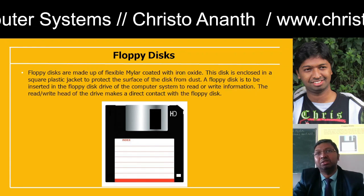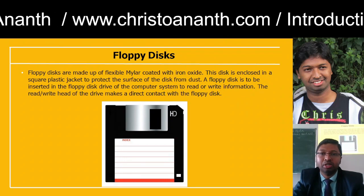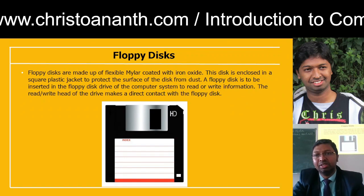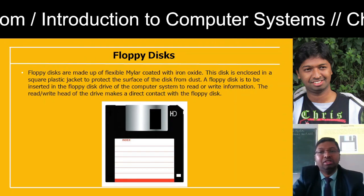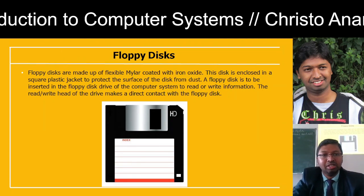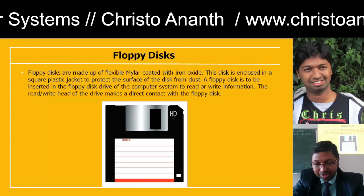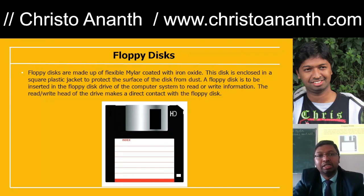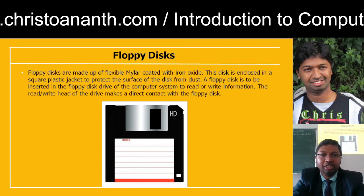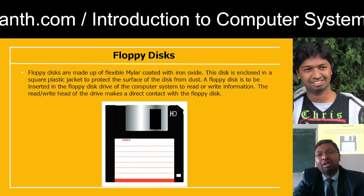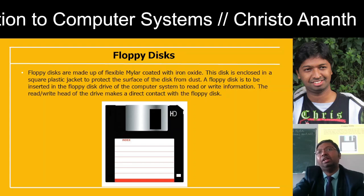A floppy disk is a flexible mylar disk coated with iron oxide, enclosed in a square plastic jacket to protect it from dust. The floppy disk is inserted into a floppy disk drive to read or write information. The read/write head makes contact with the floppy disk surface during read or write operations.